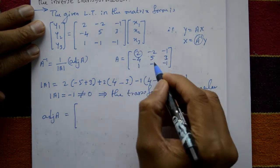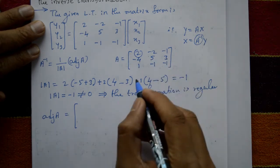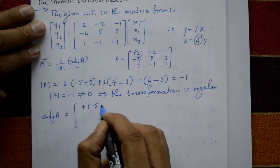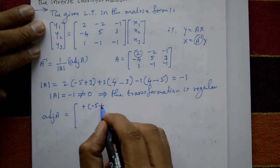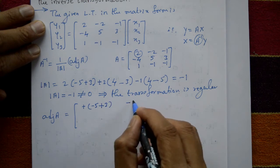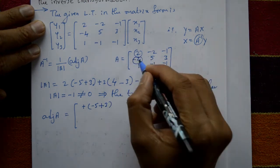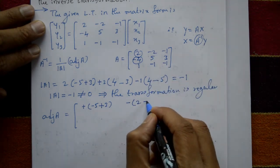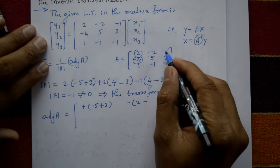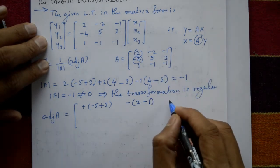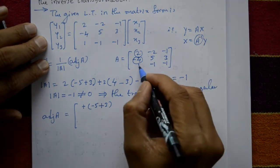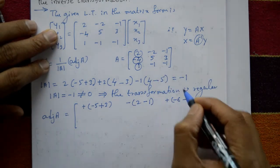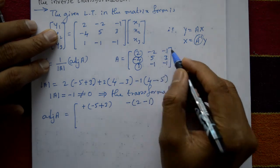Computing the adjoint of A — the cofactors for the first row: first element: (5×(-1) - (-1)×3) = -5+3 = -2; second element with minus sign: ((-4)×(-1) - 1×3) = 4-3 = 1, so +1; third element: ((-2)×(-1) - (-2)×3) = 2+6, then (-2)×3 = -6 minus 1×(-5) = +5.